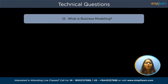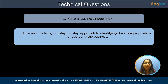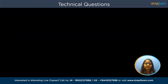What is business modeling? Business modeling is a step-by-step approach for identifying the value proposition for operating the business. The key attributes of business modeling are to develop a strategic plan of an organization. Usually the strategic plan of an organization will include vision, mission, objectives, strategies, and action plan.